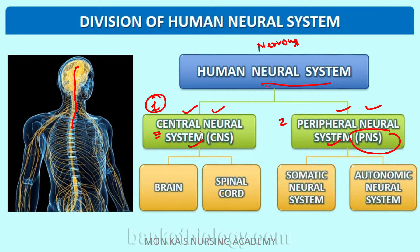The central nervous system includes first the brain, which is present at the center, and second the spinal cord. The PNS, which is termed as the peripheral nervous system, includes first the somatic nervous system and second the autonomic nervous system, which we will discuss in detail later on.